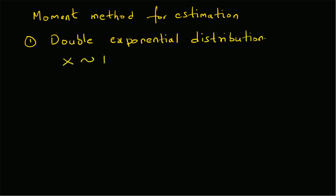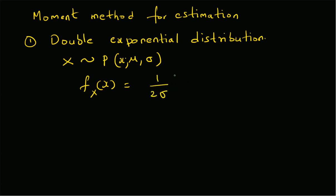For the double exponential distribution, the random variable x belongs to a distribution with parameters mu and sigma. Our goal is to find the parameters mu and sigma from a given data of n values. The probability density function f(x) is defined as (1/(2*sigma)) * exp(-|x - mu| / sigma), where sigma is always positive.